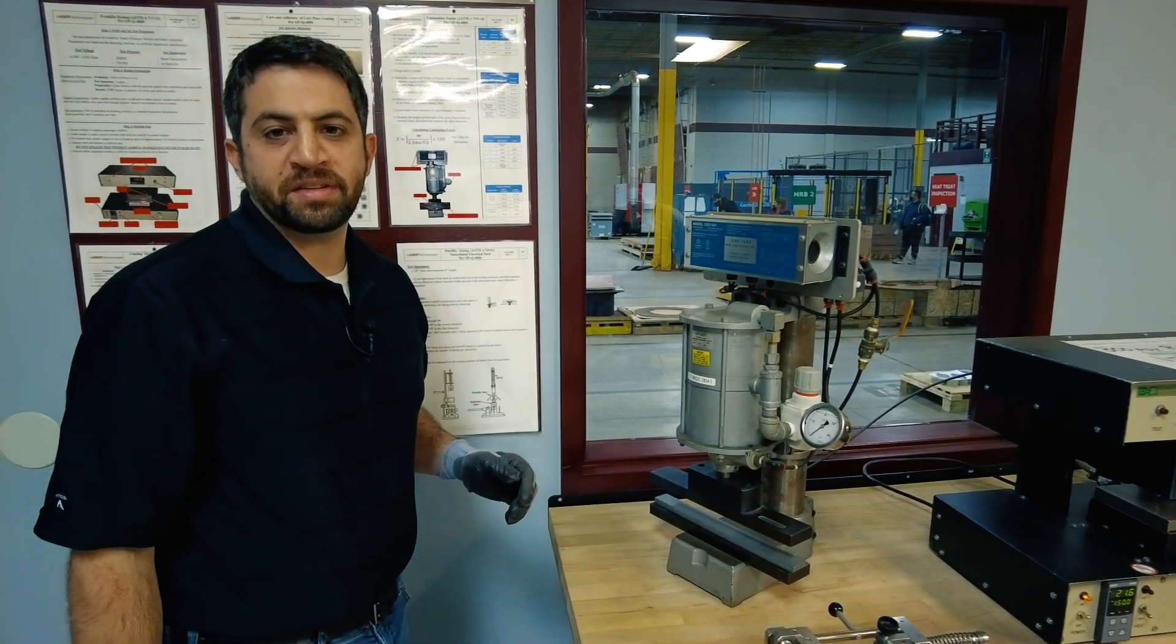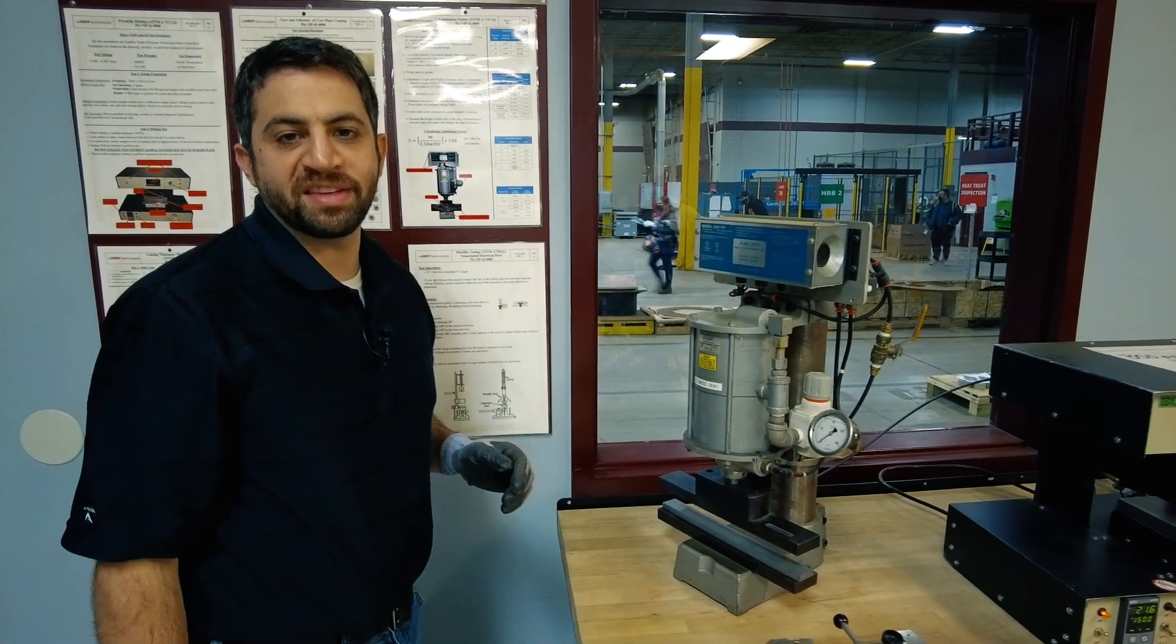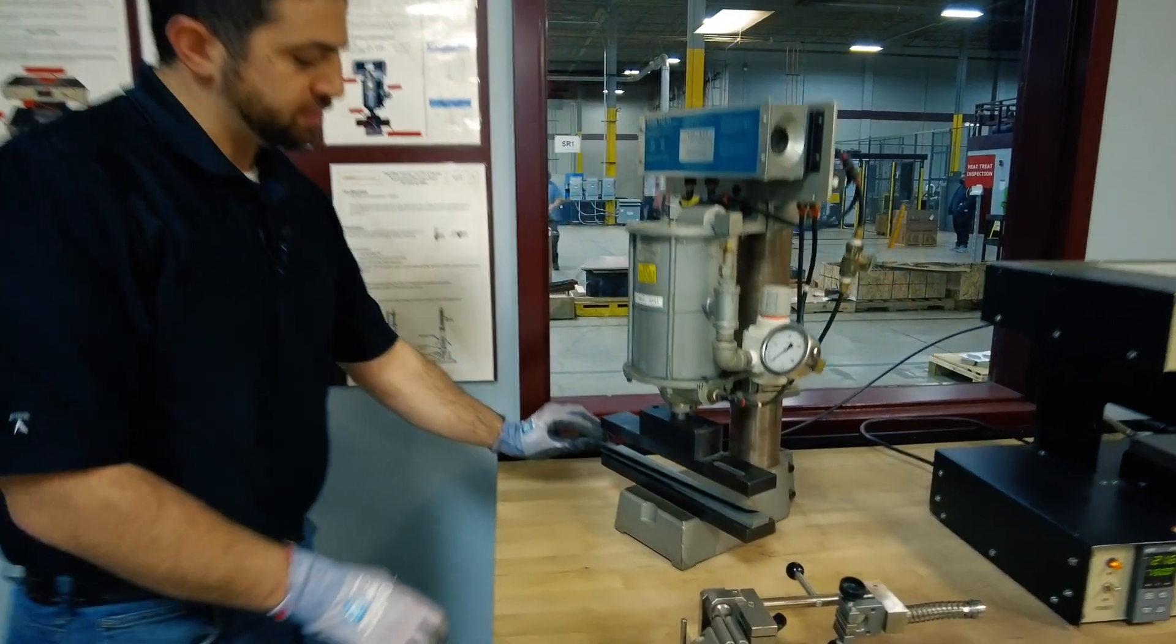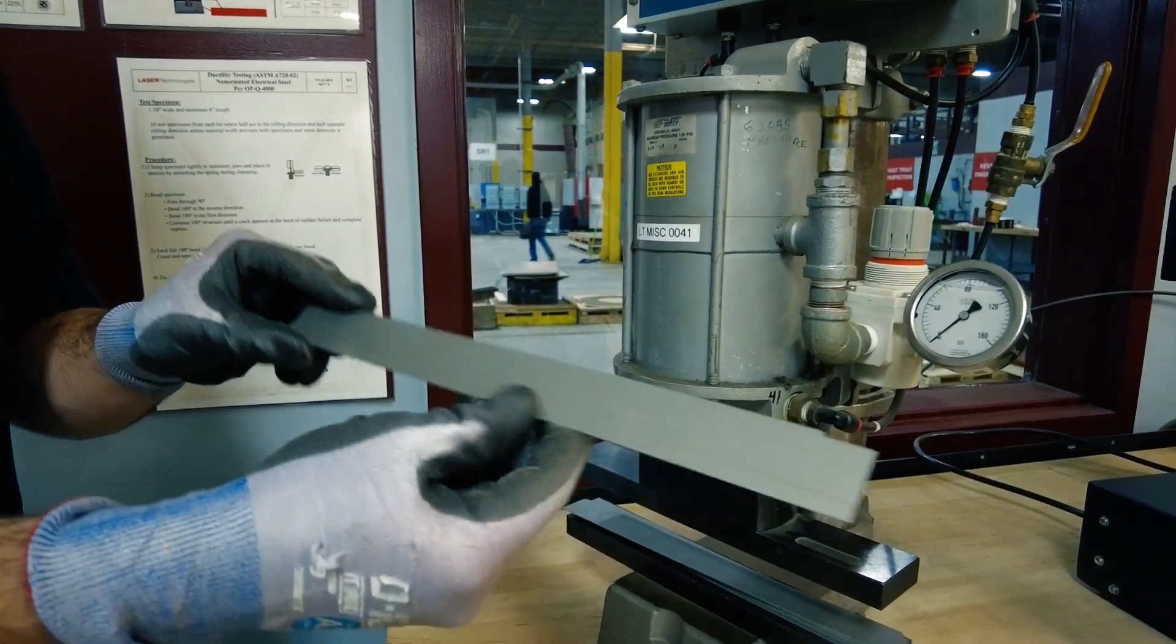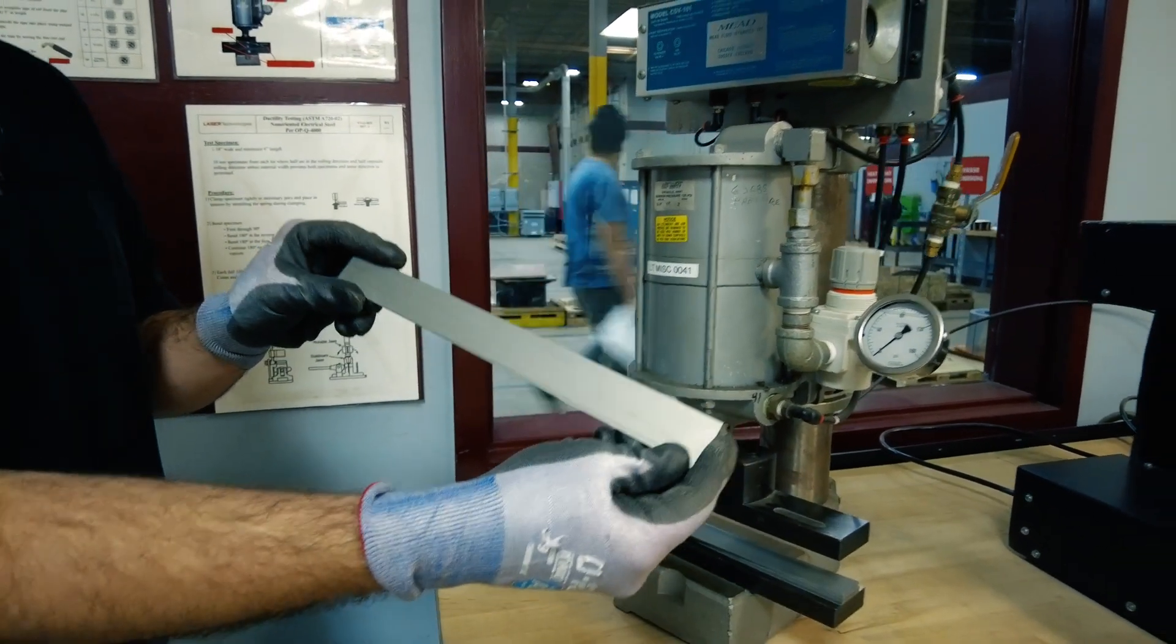This is a stacking factor test governed by ASTM A719. We'll take strips of material that are coated with core plate coating and get measurements on them in terms of size and weight.